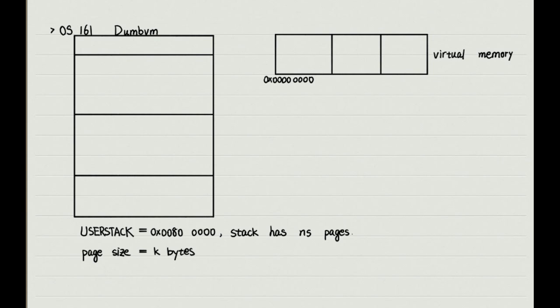OS 161 virtual memory uses segmentation, and because of its simplicity, it is called dumb VM.